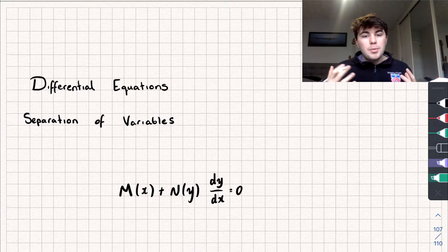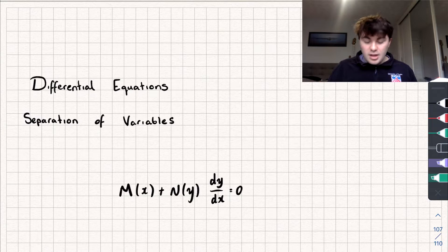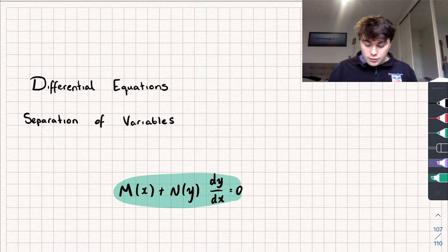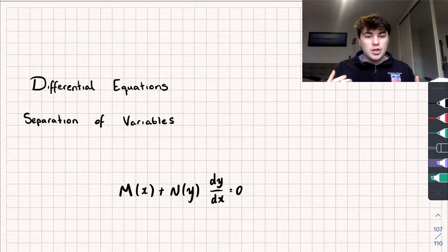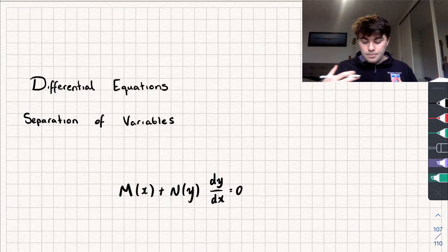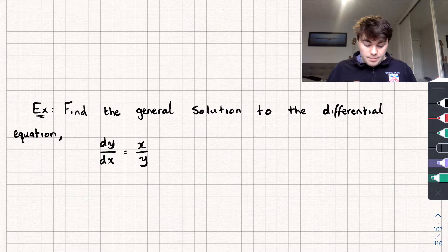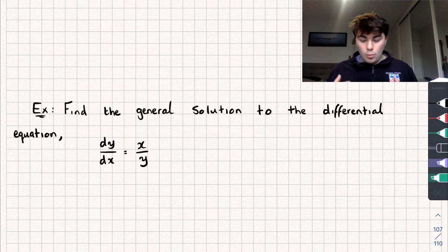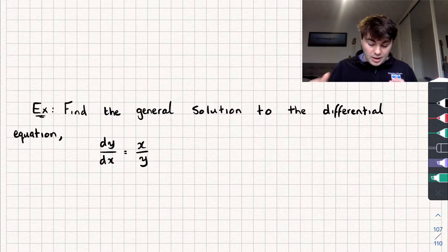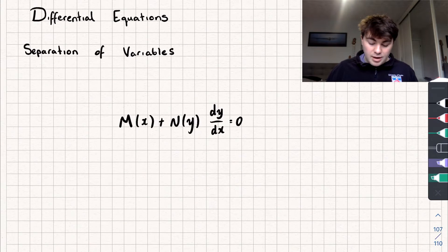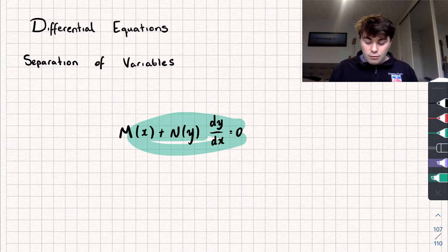We're going to be using this separation of variables method if we have a differential equation of this form here — some function of x plus some function of y multiplied by dy/dx. It might not look exactly like this, so we'll take a look at an example. Here we have dy/dx equals x over y, and if we multiplied both sides by y and subtracted x from both sides we would have a differential equation in that form.